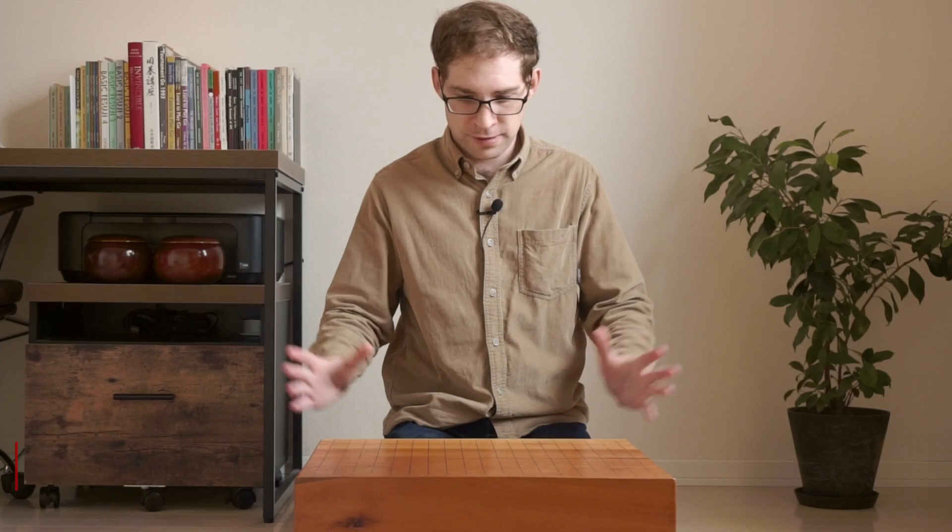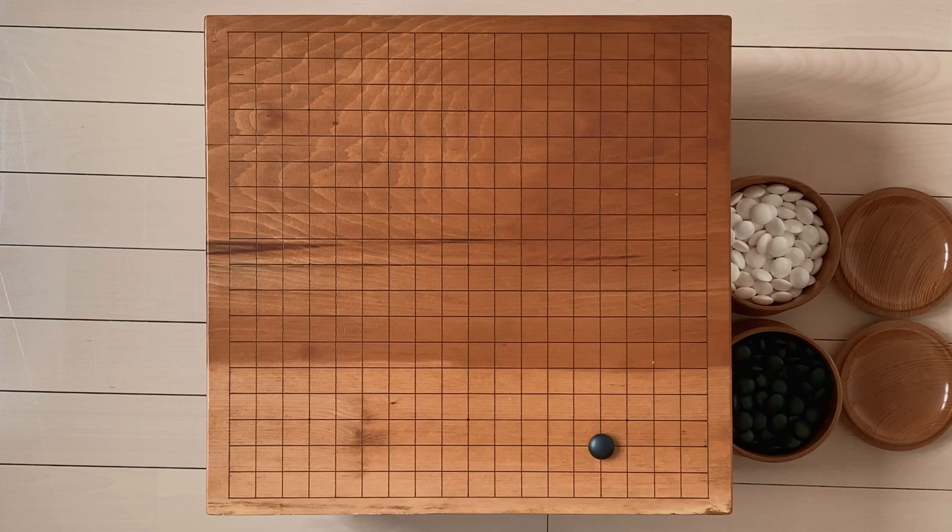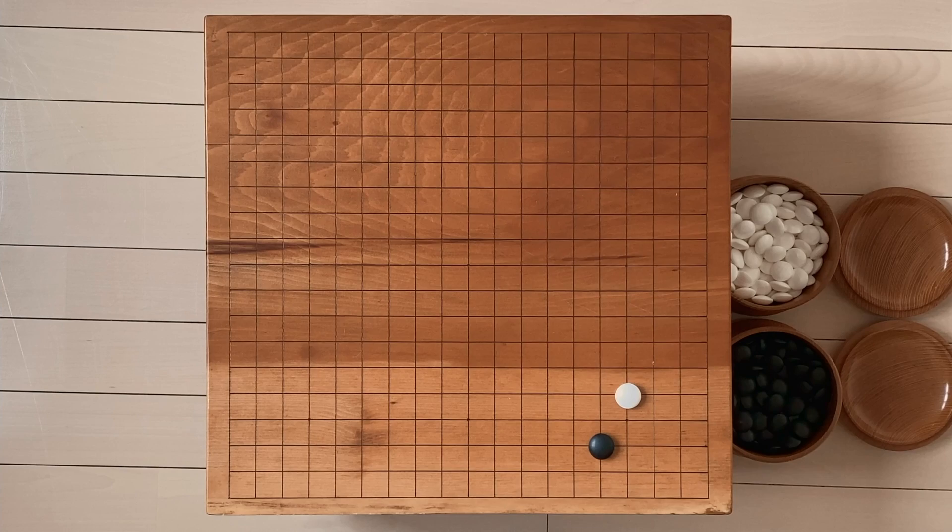Here we are, empty board, and your opponent decides to play the 5-3. Now there are two basic answers to the 5-3 point: the low approach or the high approach. Now you'll notice the first thing we're going to start with is the low approach. It's the most common.